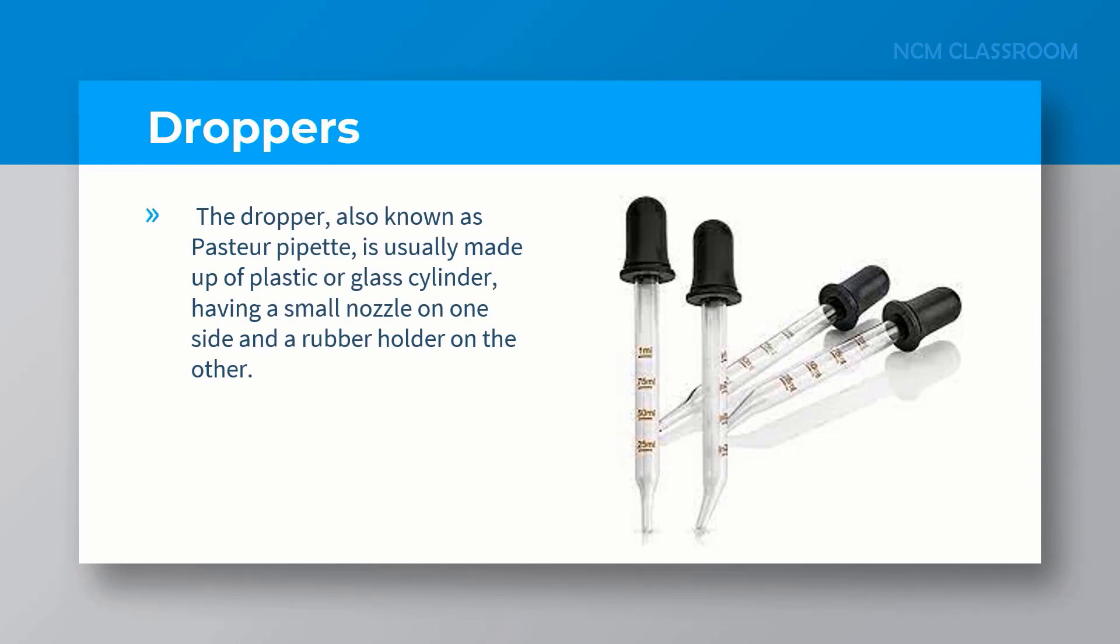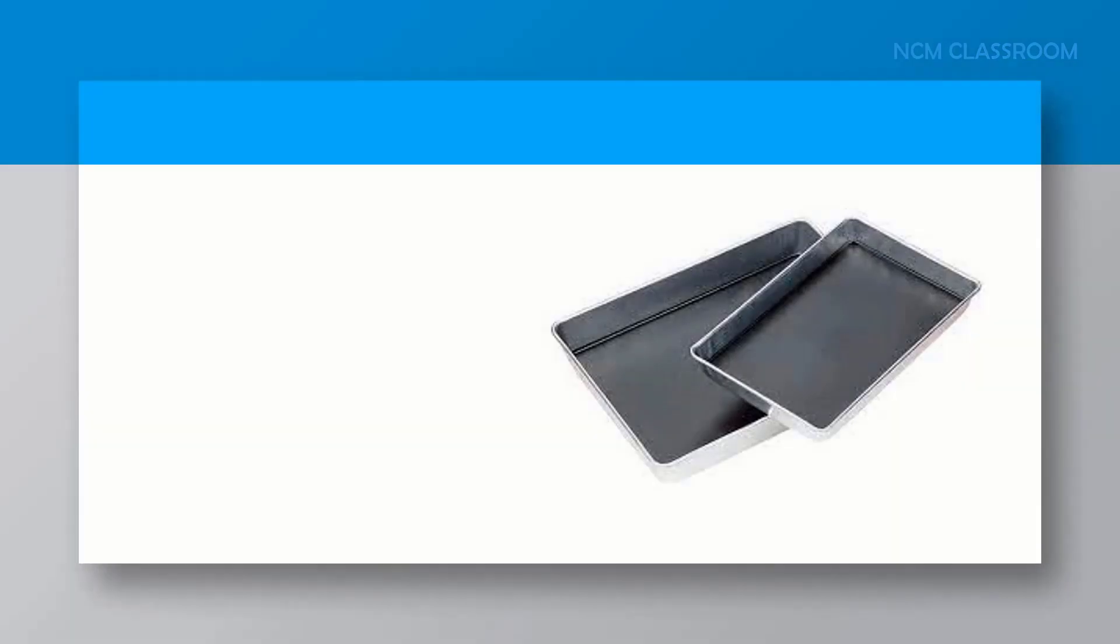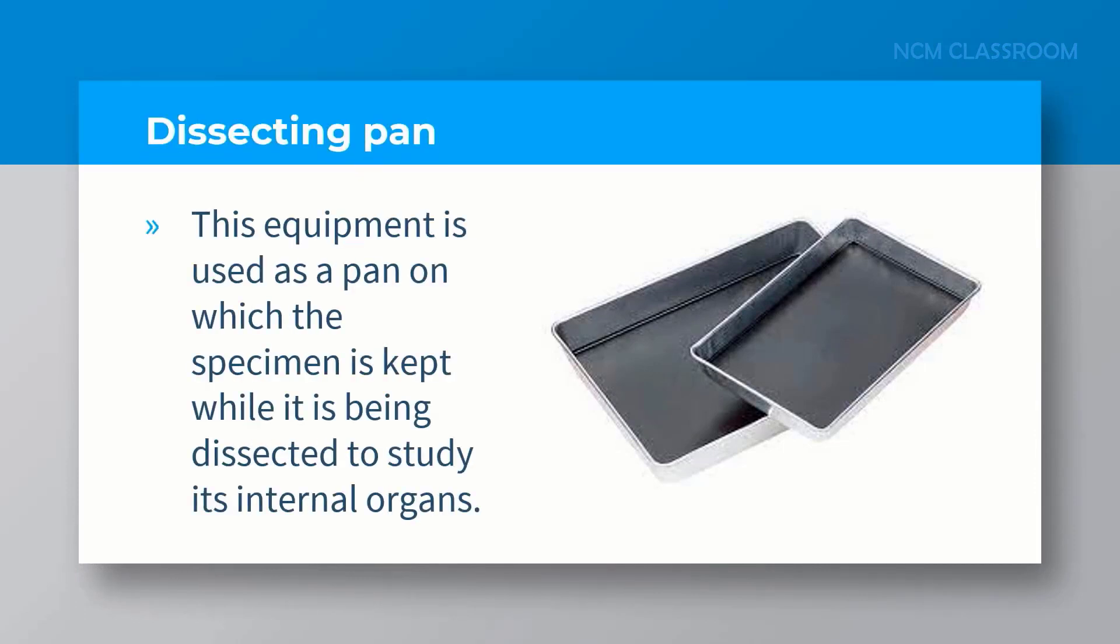Droppers, also known as plastic pipettes, are usually made up of plastic or glass cylinder having a small nozzle on one side and the rubber holder on the other side. It is easy to put the liquids or solutions in any medium dropwise, that is one drop at a time.